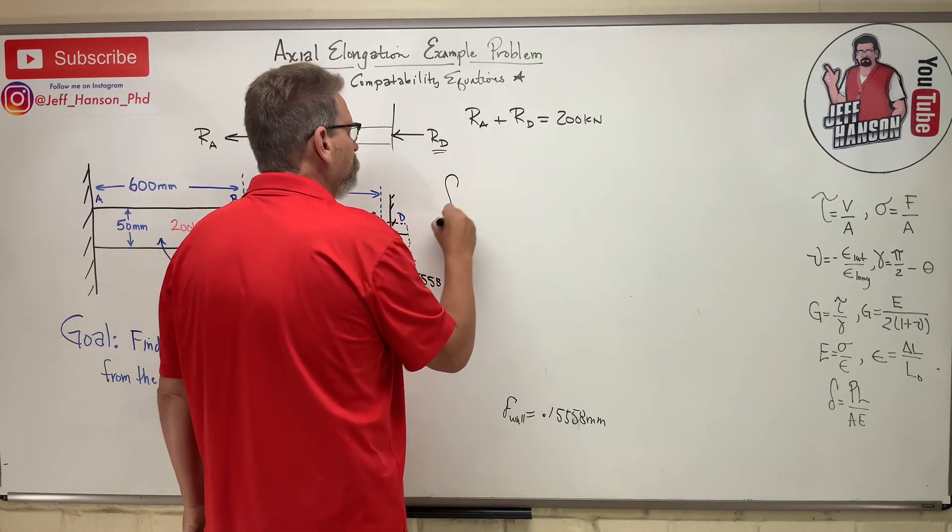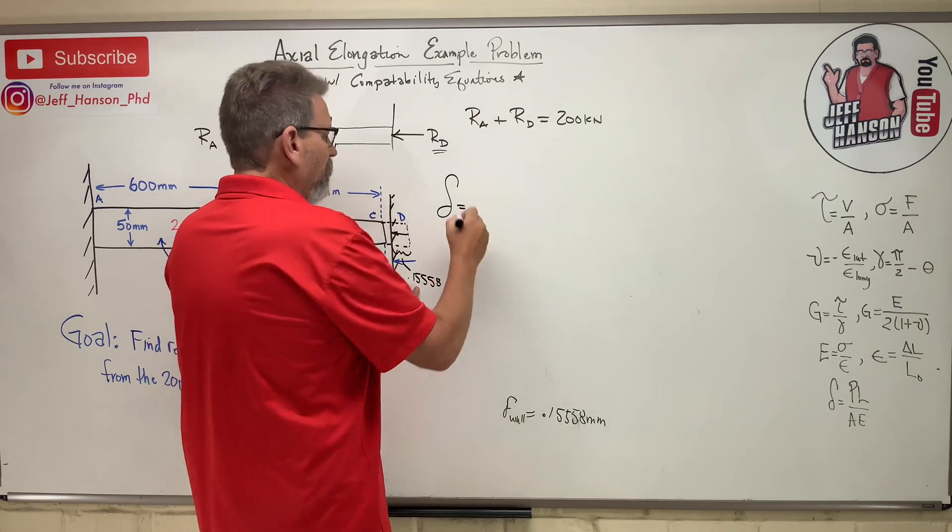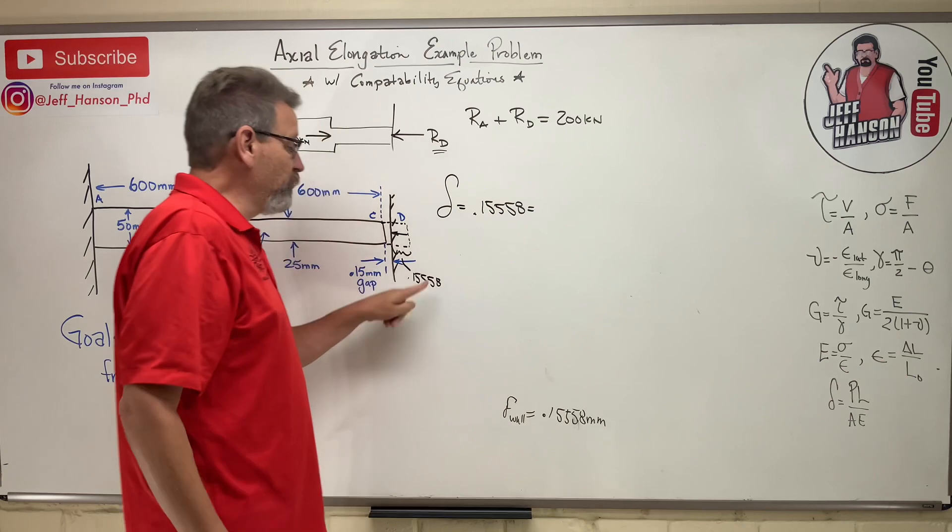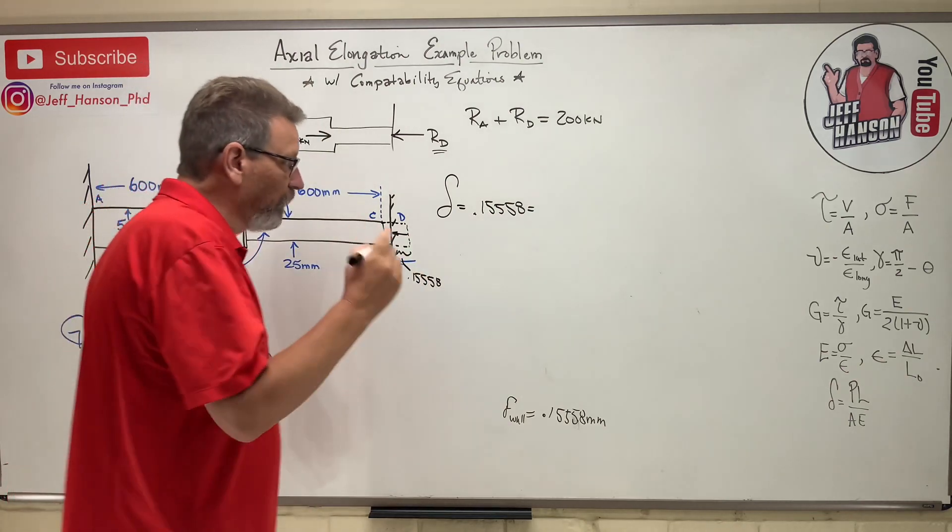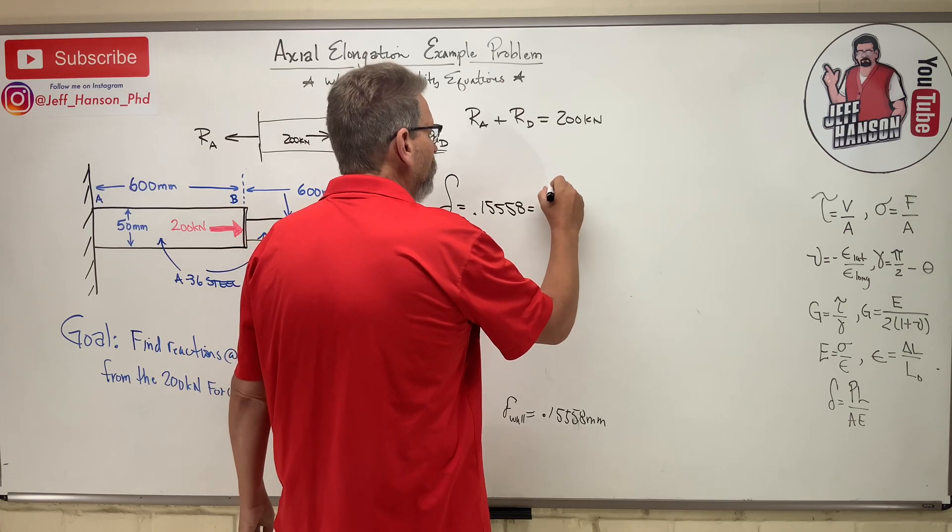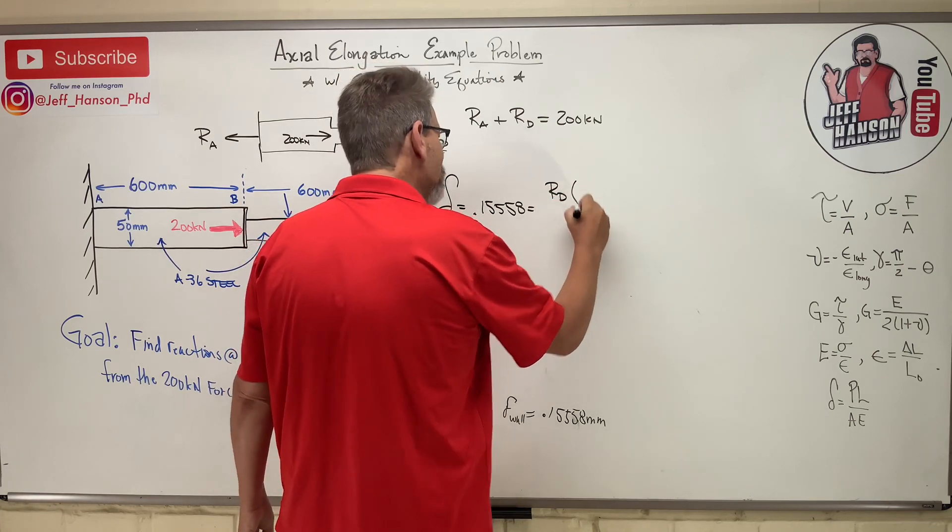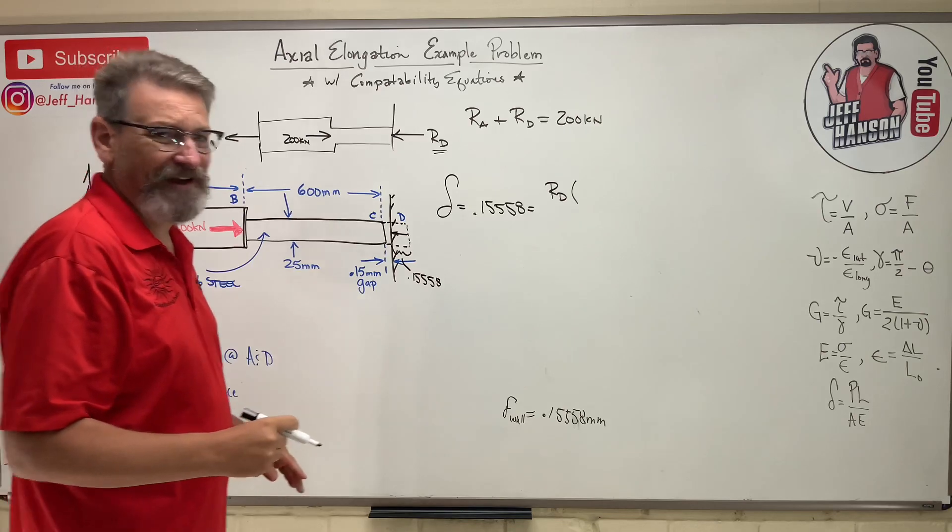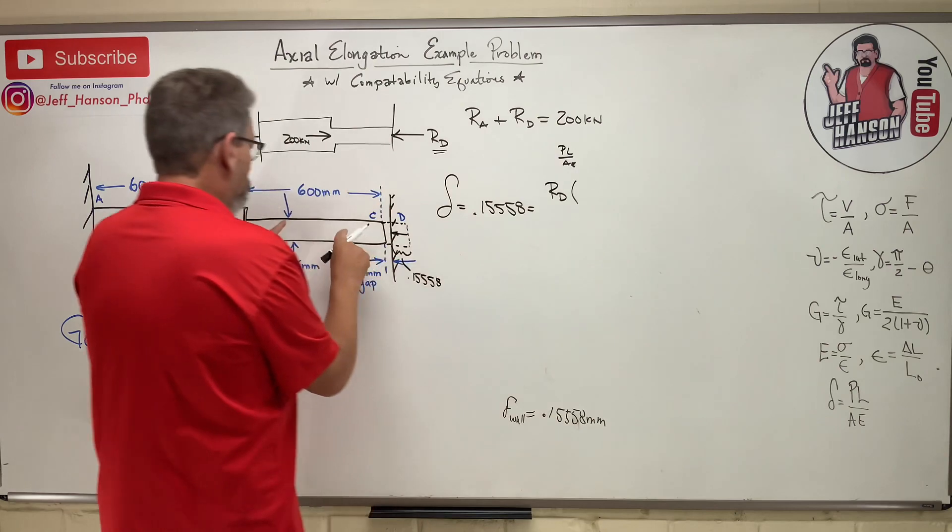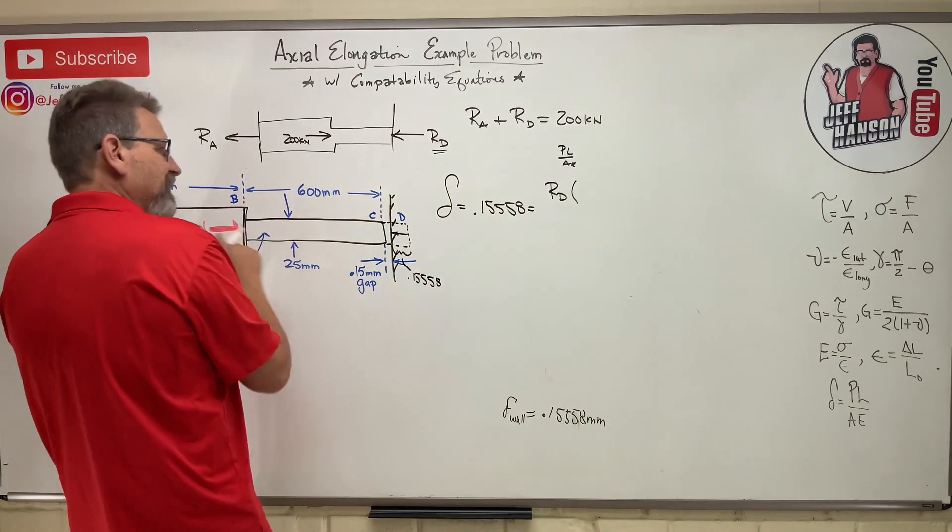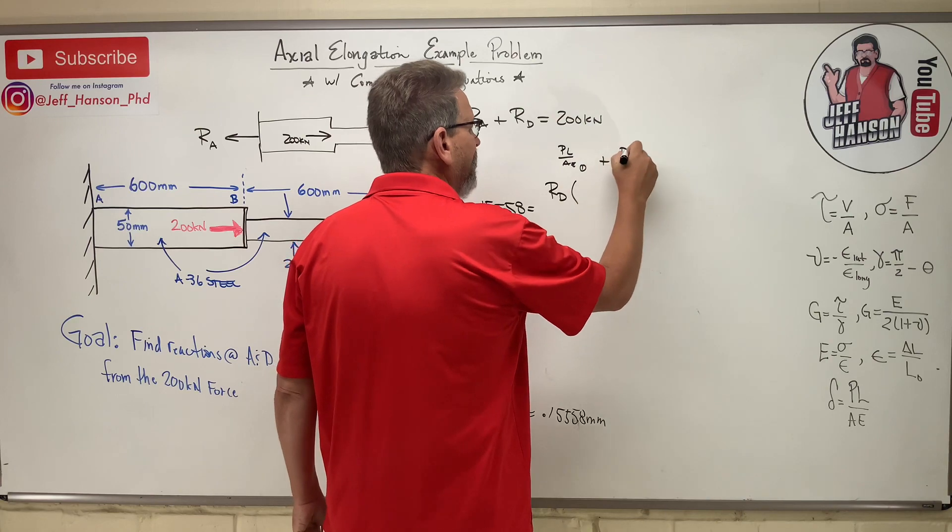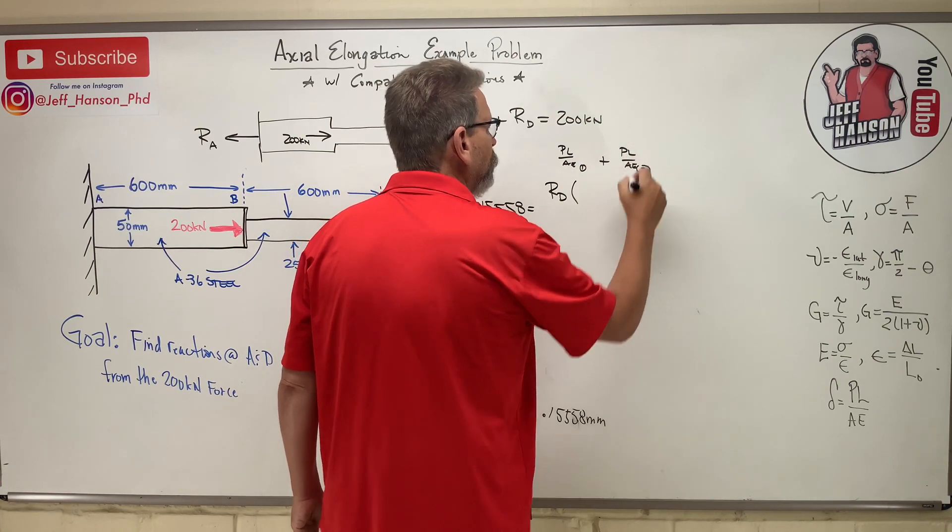So here's what we've got. Delta is equal to 0.15558, which that's how much we have to push it back. Well, force Rd is. So Rd times, we're doing PL over AE here, right? So I'm going to do PL over AE for section 1 and then section 2, right? So here's for section 1 and then plus PL over AE for section 2.